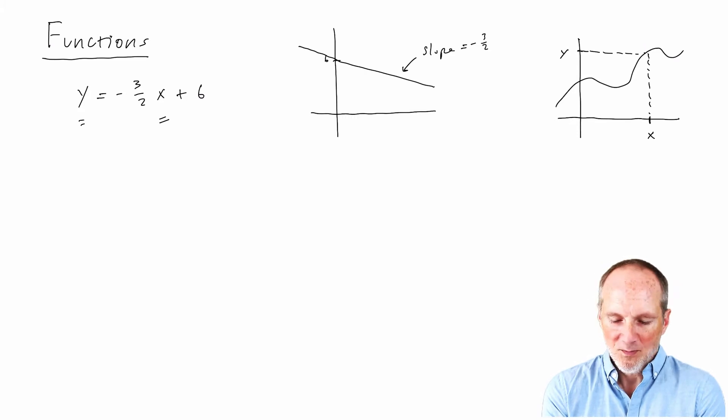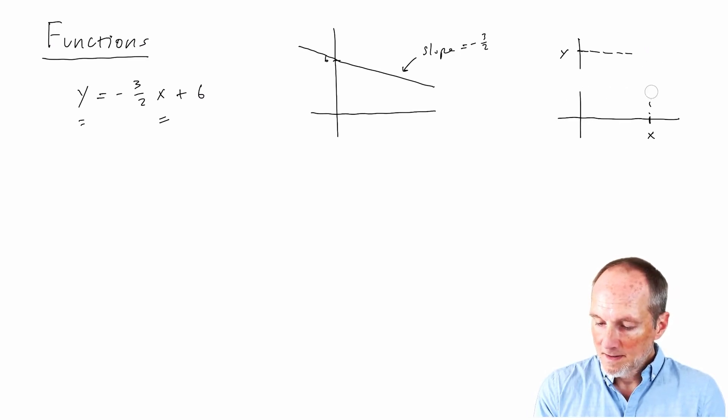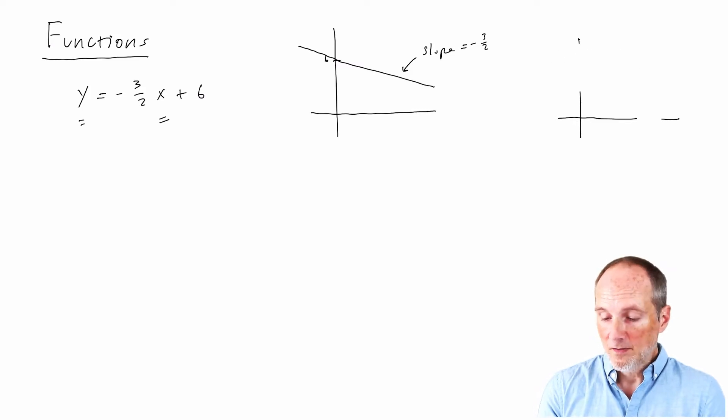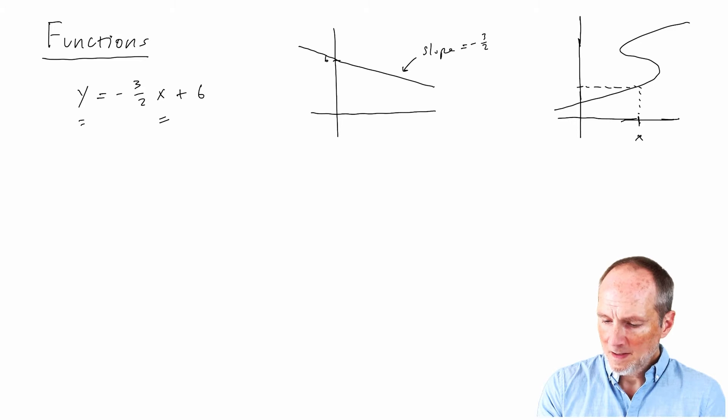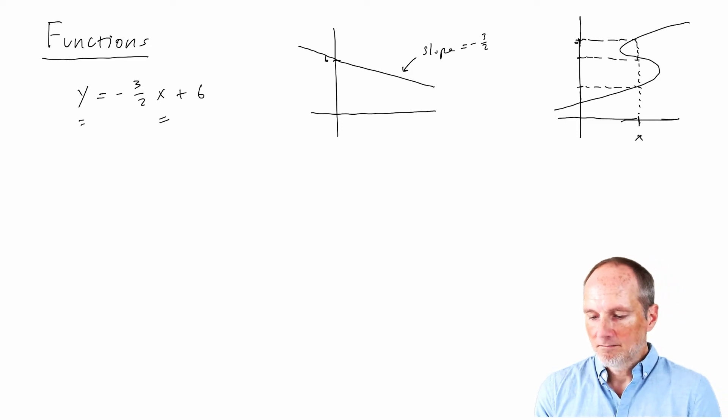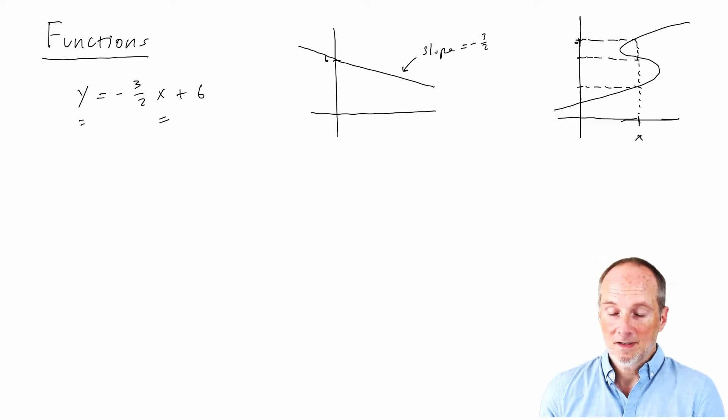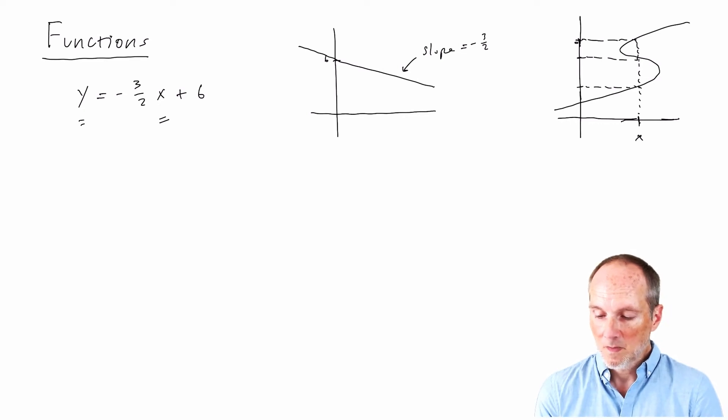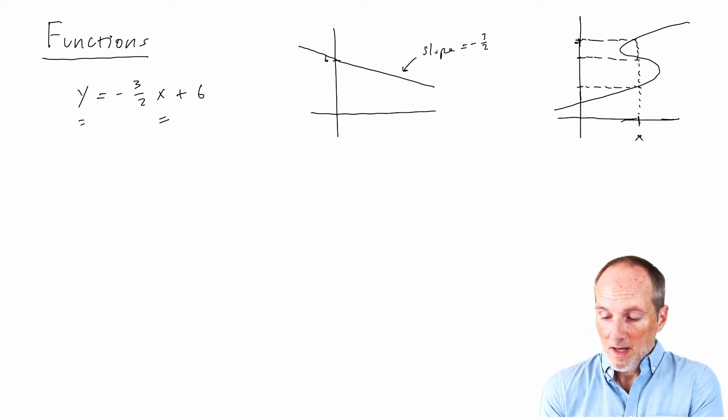And basically, I could draw any old curve there. The only restriction, as you've probably come across, is that I'm not allowed to draw a curve that does not give me a unique value for x. So suppose I have something like this. Well then, at x, it gives me this value, but it also gives me this value, and it gives me this one. That is not a function, at least it's not a function that gives us a number.